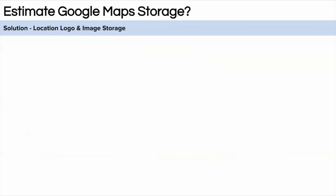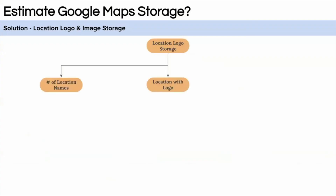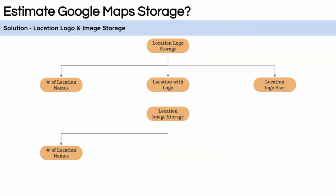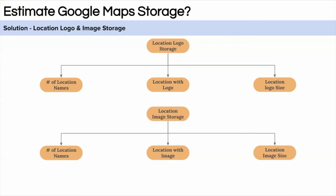For location logo storage: total locations multiplied by percentage of locations having logos, multiplied by logo size. We have 260 million total locations. Assuming 20% have logos, skewed towards institutional or commercial buildings, and a logo size of 50 KB — the total logo storage comes to around 2.6 terabytes.